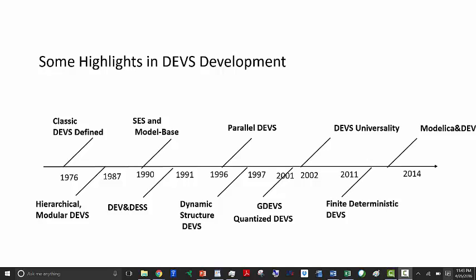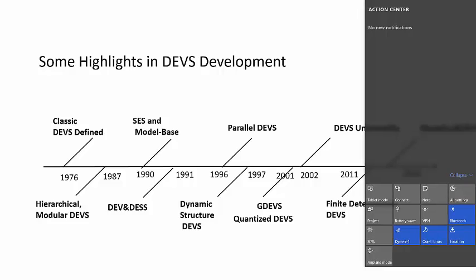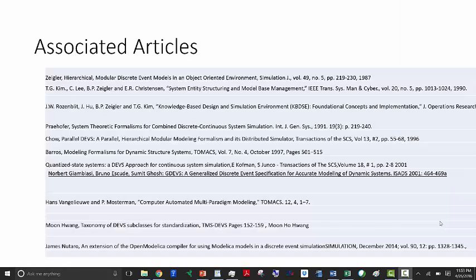And recently, we have finite deterministic DEVS, and also finite probabilistic DEVS and stochastic extension of DEVS. And just recently, the implementation of DEVS and DESS for hybrid systems — very complex differential algebraic equation systems — in Modelica and DEVS. Here is a list of articles associated with the milestones just presented.